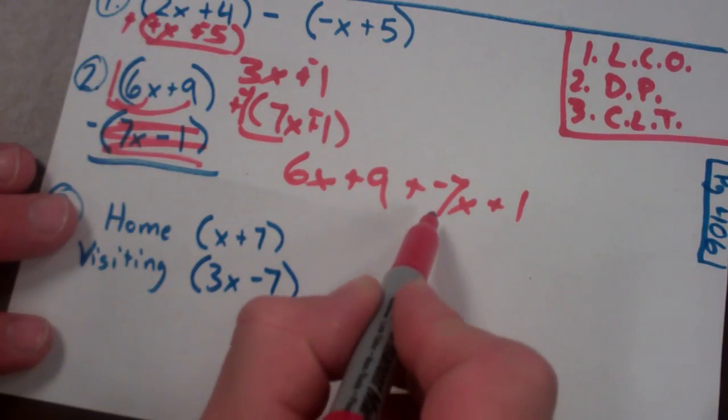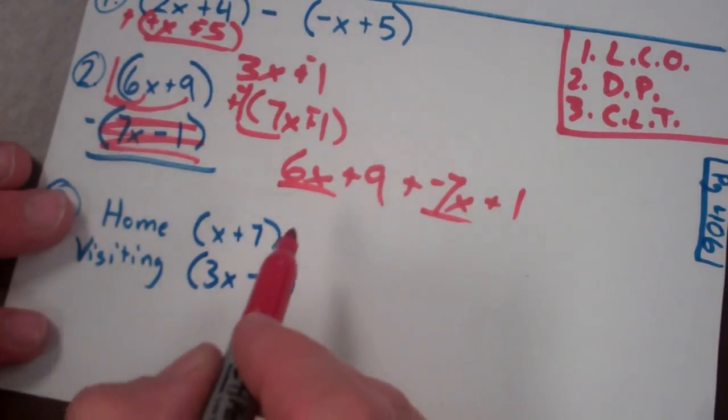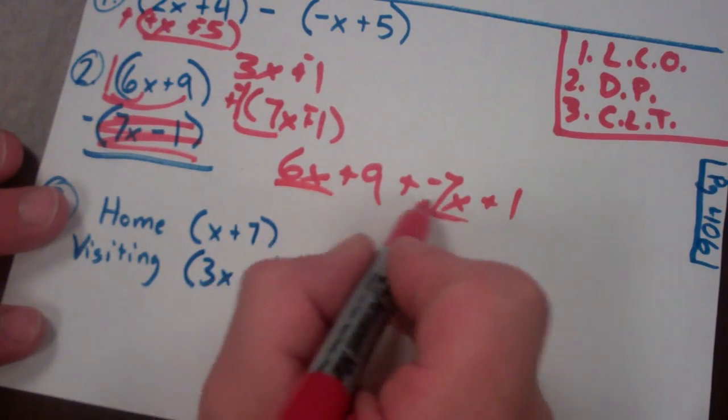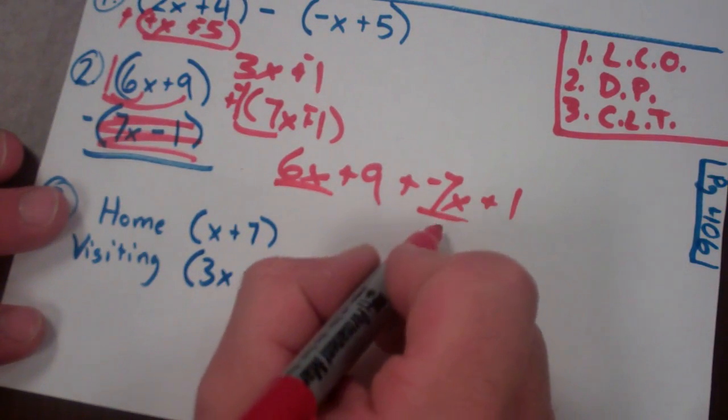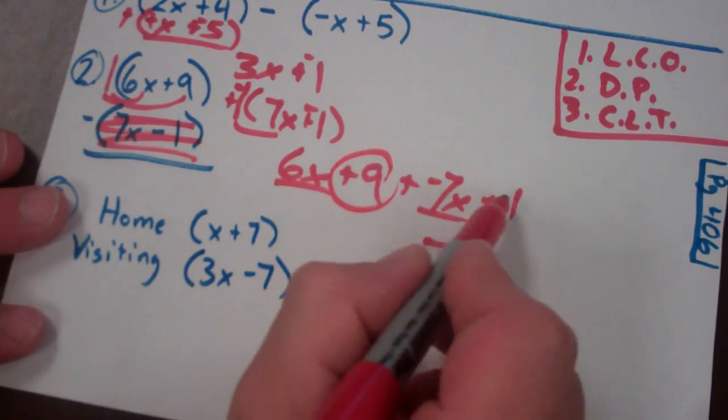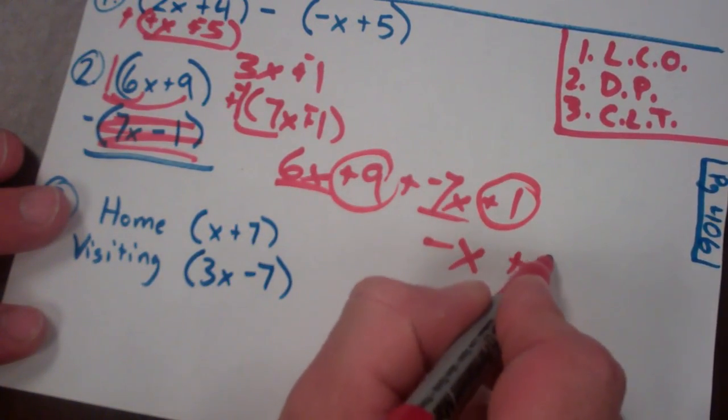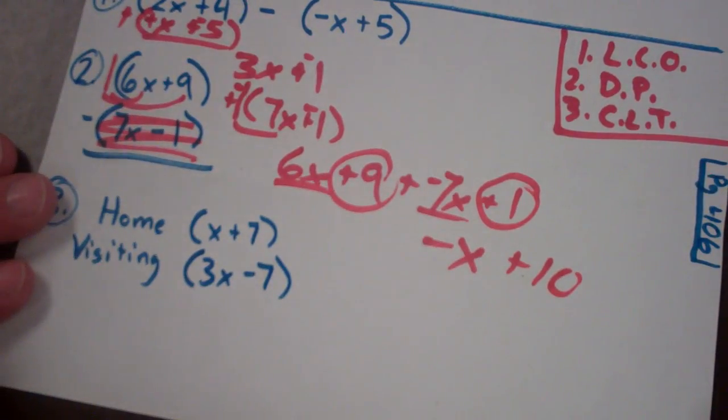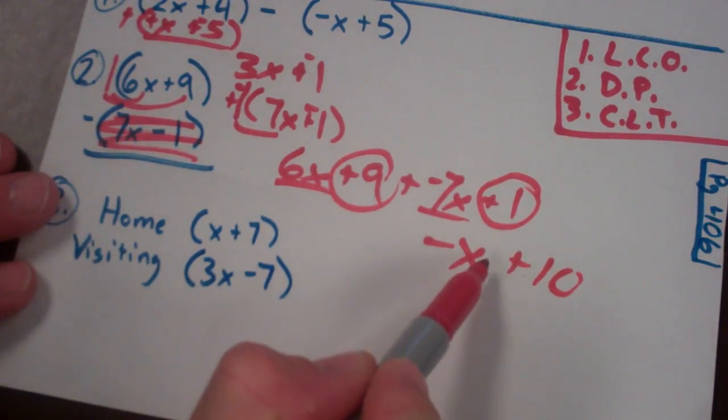Now get your like terms together. I have these negative 7x's and these 6x's at different signs, so I'm going to have to subtract to use the sign of the larger. So I end up with a negative x or a negative 1x. And a 9 and a 1 becomes 10. And I've got them as negative x or the opposite of x plus 10.